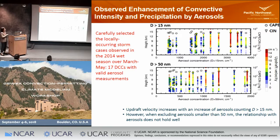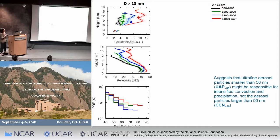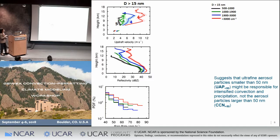However, when you remove those aerosol particles smaller than 50 nanometers — which we call the ultra-fine aerosol particles — then the trend does not hold anymore. To quantify this impact, I regrouped the cases into four aerosol groups from low to high aerosol. The updraft velocity increases from about 3 to 10 m/s — that is pretty dramatic. And the vertical profile of radar reflectivity increases from 3 to 10 dBZ and from 5 to 30 dBZ, which is also very dramatic.